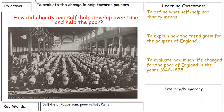In this lesson we need to do three things: look at what charity and self-help actually means, explain how the trend of charity and self-help grew for the paupers of England — the ones who relied on poor relief — and then evaluate how much life changed for the poor, or whether it only changed because of the selfish motives of certain individuals.